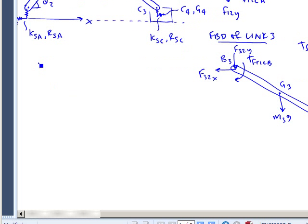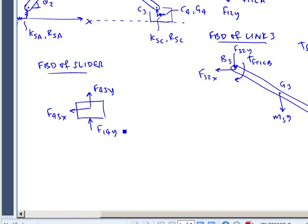And finally down here, I will draw the free body diagram of the slider, which will consist of, I'm going to have an equal and opposite F43Y, an equal and opposite F43X. I'm going to have a normal force between the slot and the slider, which I'll call F14Y, which is basically N. I have a weight force, M4G.